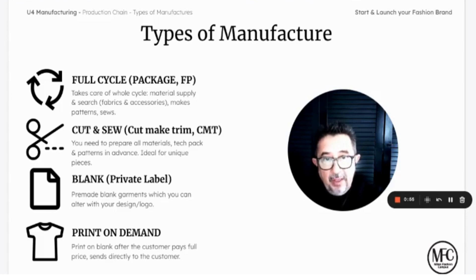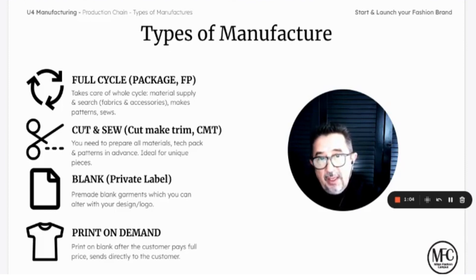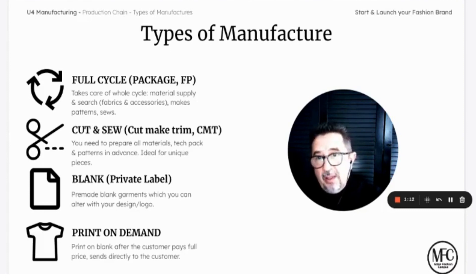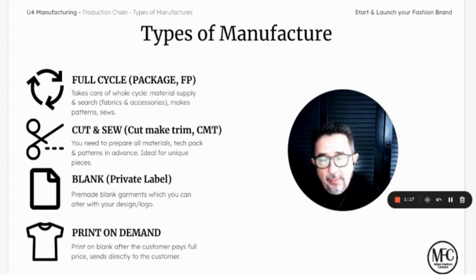Then we have the private label, blank. That means that sometimes you can go to these companies — they have a lot of items — and you can select some of these items and ask to make changes or ask to make it in another fabric. At the end, you can ask also to put your brand, your logo. So in this case, you don't have to pay for the patents. You don't lose time, because you see the items, you like them, and then you tell the company what you want to do, what type of changes you would like to have.